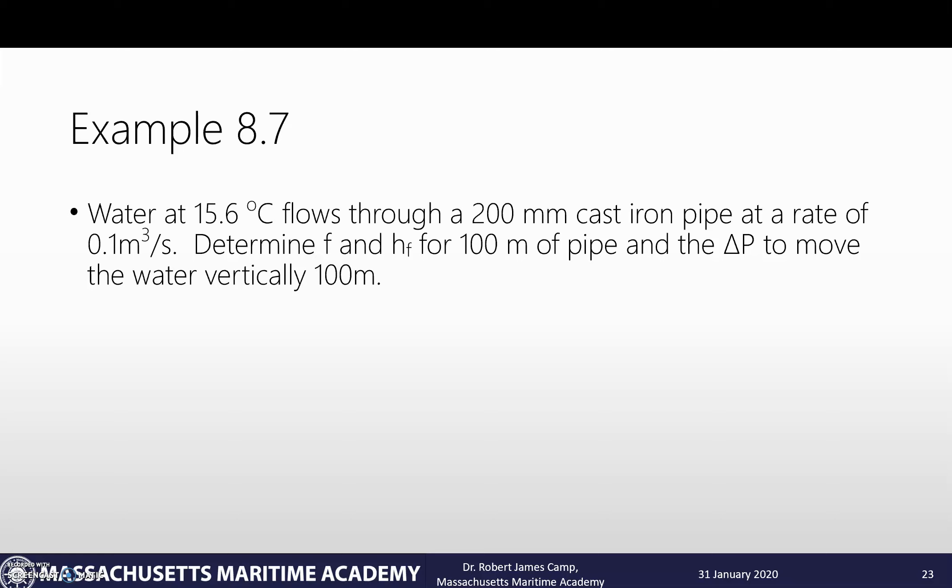Water at 15.6 degrees centigrade flows through 200 millimeters of cast iron pipe at a rate of 0.1 cubic meters per second. Determine F and HF for 100 meters of pipe and the delta pressure to move the water vertically 100 meters.